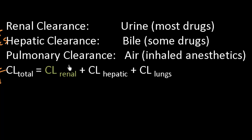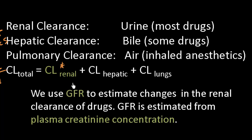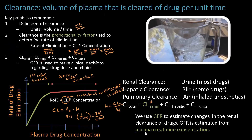If a patient has decreased renal clearance — from chronic kidney disease or aging — we have options: choose a hepatically cleared drug, decrease the dosage, or increase the spacing between doses to prevent drug buildup from inadequate elimination. Clinically, renal clearance is estimated using the glomerular filtration rate, which we determine by measuring the plasma creatinine concentration. The next video will discuss GFR and plasma creatinine in more detail.